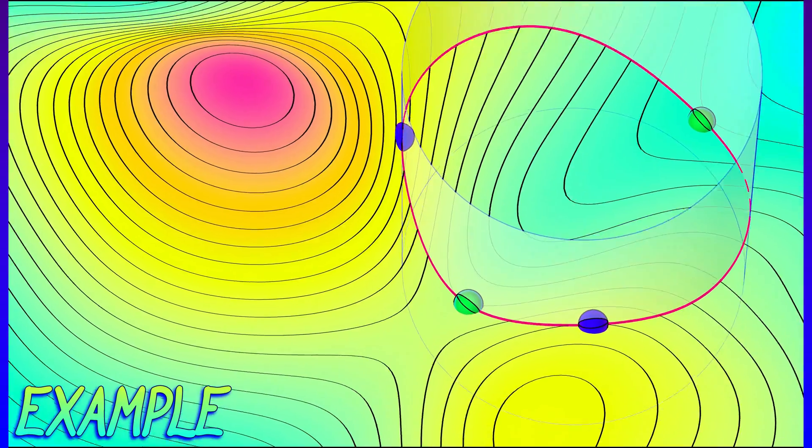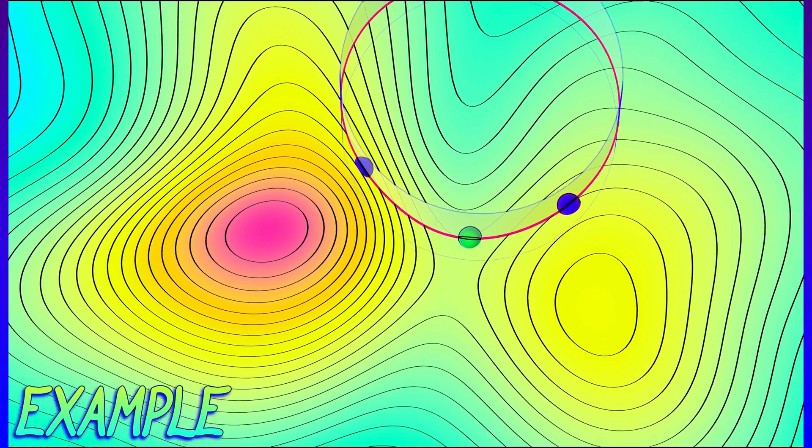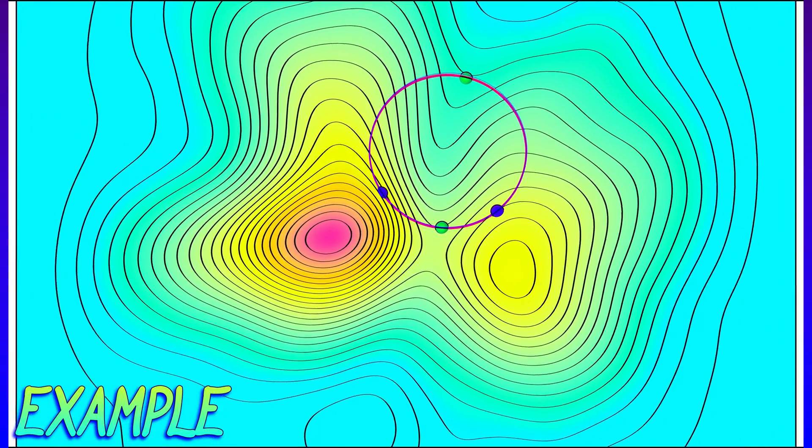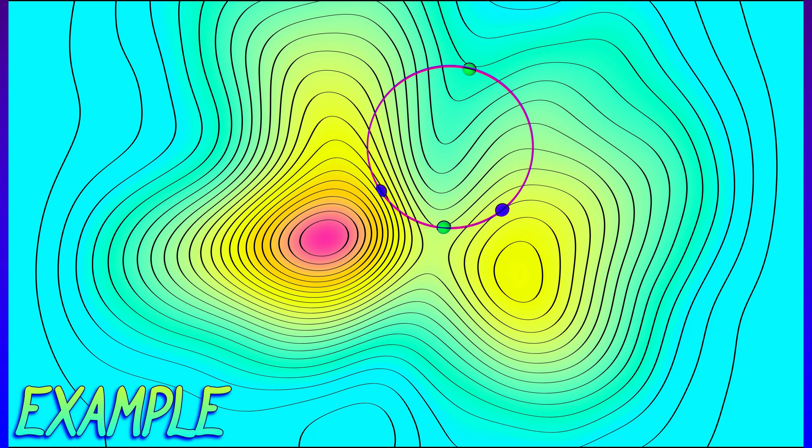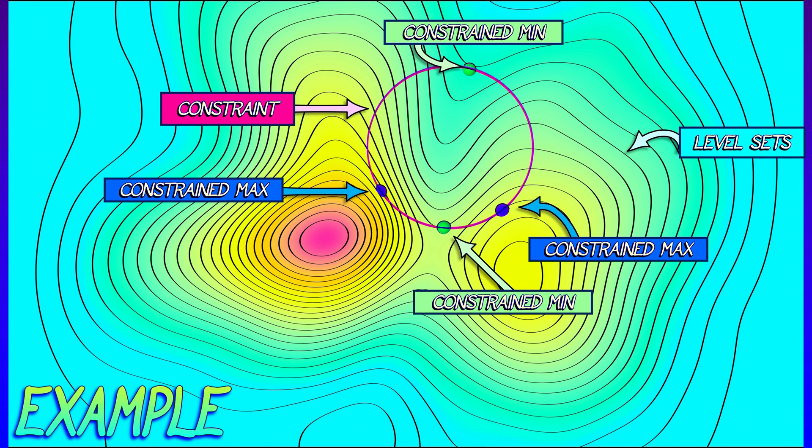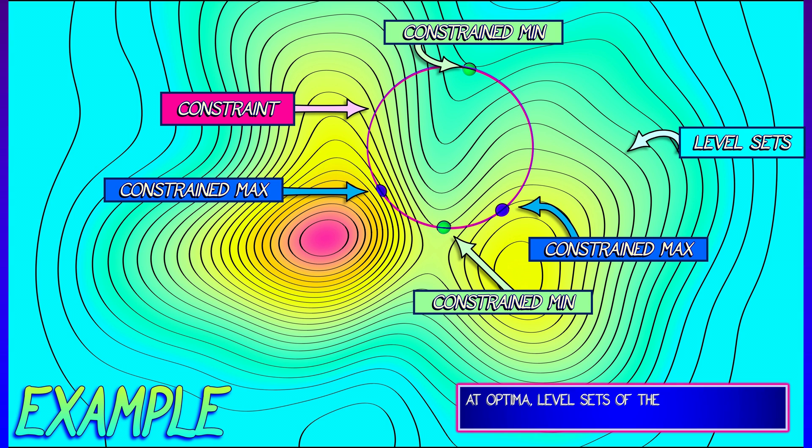both from a 3D perspective where you're looking at the graph and from the 2D perspective where you're looking at the level sets straight up. You can see how those maxima and minima are related to the tangencies between the level set and the constraint set.